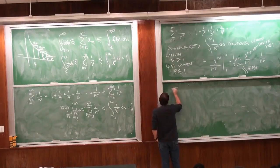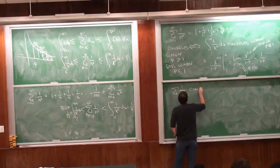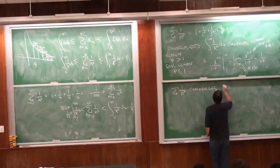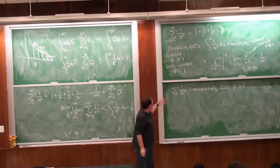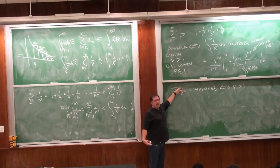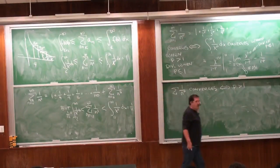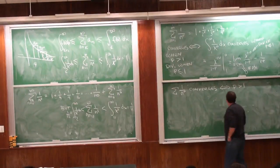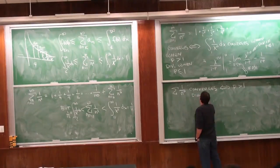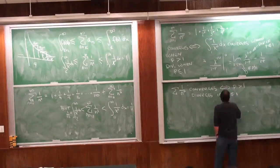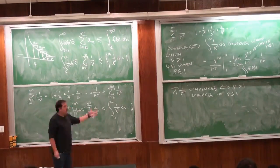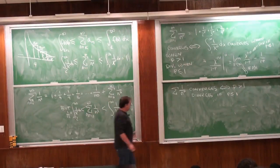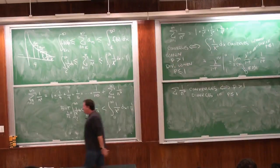To summarize: the p-series sum of 1/n^P converges exactly when P is bigger than 1, and diverges when P is less than or equal to 1. That makes sense: when n is really big, it only converges if what you're adding is small enough, and 1 over n^P is small when P is big. So now we have a whole pile of things to compare to — namely these p-series — which makes our life a lot easier because we don't have to integrate all the time anymore.